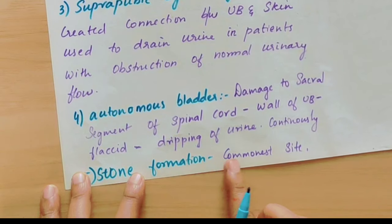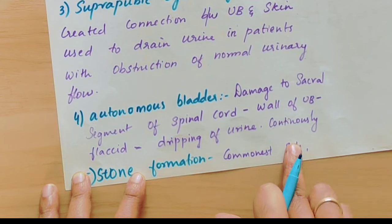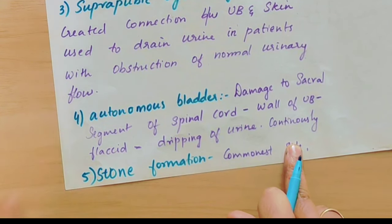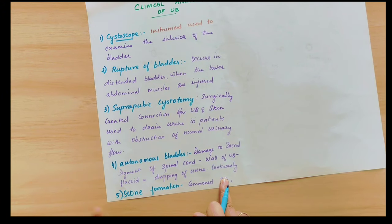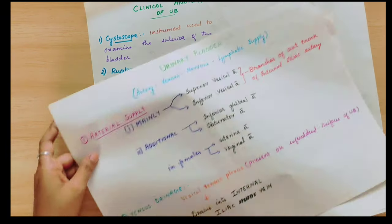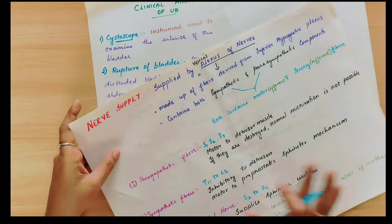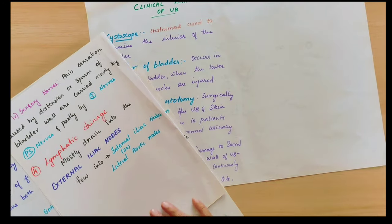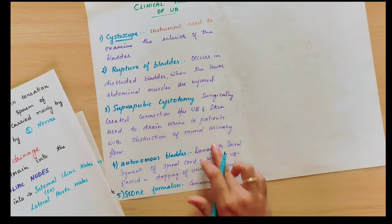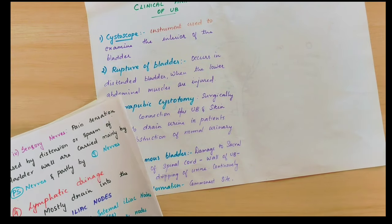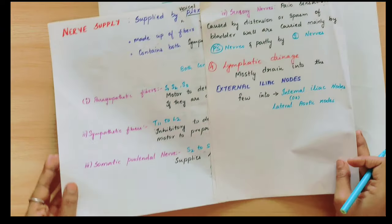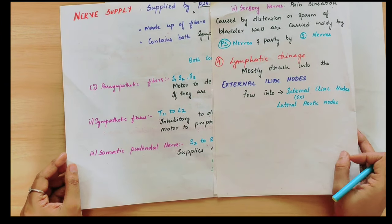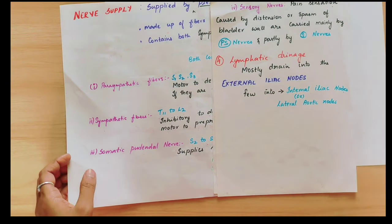Now coming to stone formation in the urinary bladder. It is the commonest site for the formation of stones, where urine minerals crystallize and form stones. So this is all about the clinical anatomy. We have covered the arterial supply, venous drainage, nervous supply, and lymphatic drainage of the urinary bladder, along with the clinical anatomy. Thank you for watching. If you have any doubts or suggestions, please let me know in the comment section below.